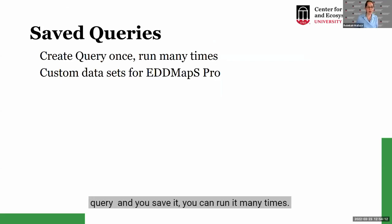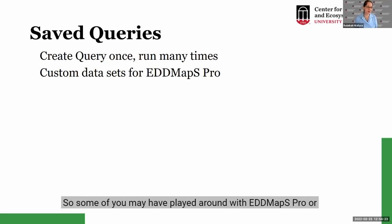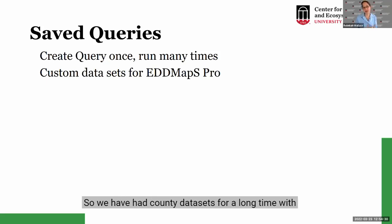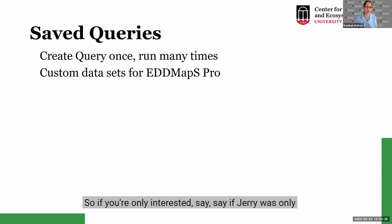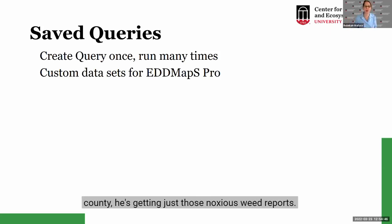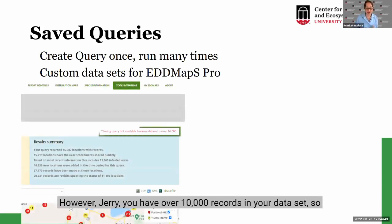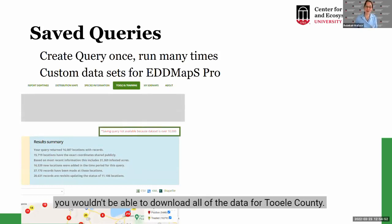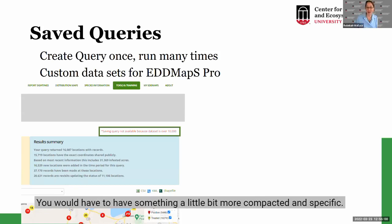Moving on to Saved Queries — once you create a query and save it, you can run it many times. This also allows for custom datasets in EdMaps Pro. We've had county datasets for a long time in EdMaps Pro, but now we have custom datasets. For example, if Jerry was only interested in noxious weeds in Tualatin County, he's getting just those noxious weed reports rather than everything in the county. However, with over 10,000 records in that dataset, he wouldn't be able to download all of it — 10,000 records is the current cap for EdMaps Pro downloads.